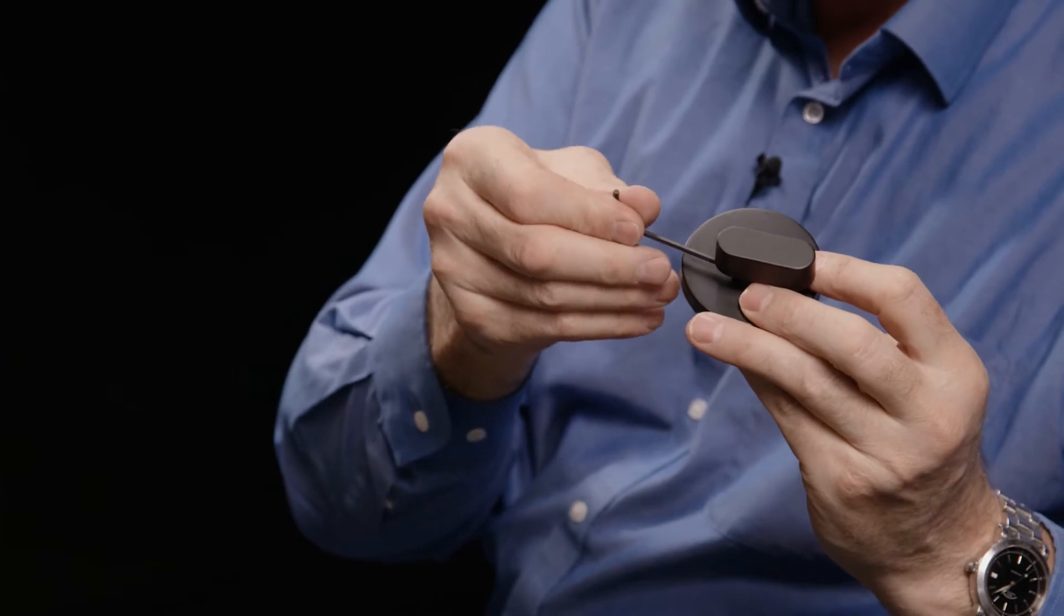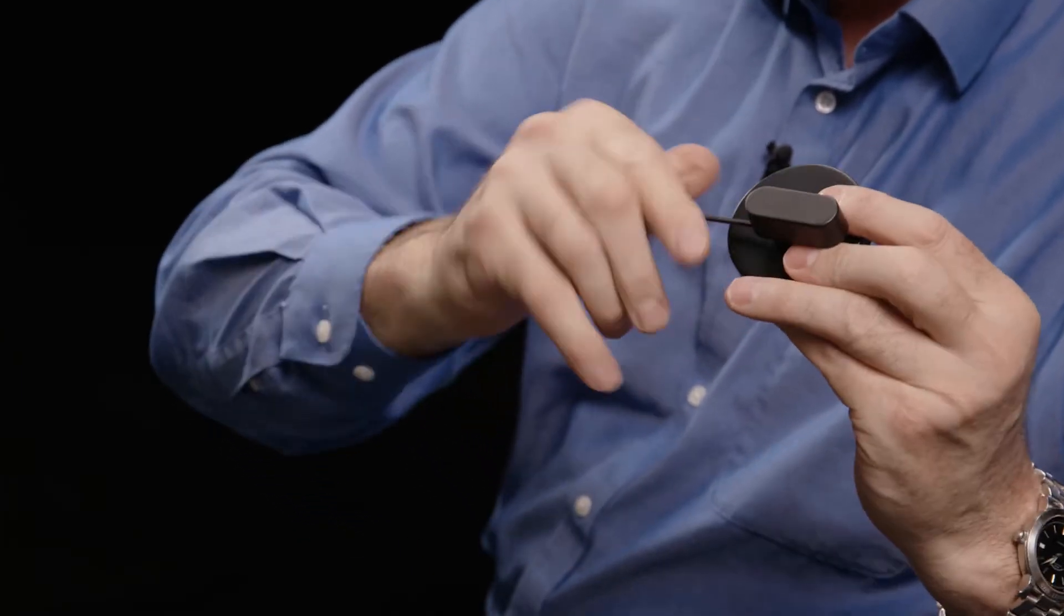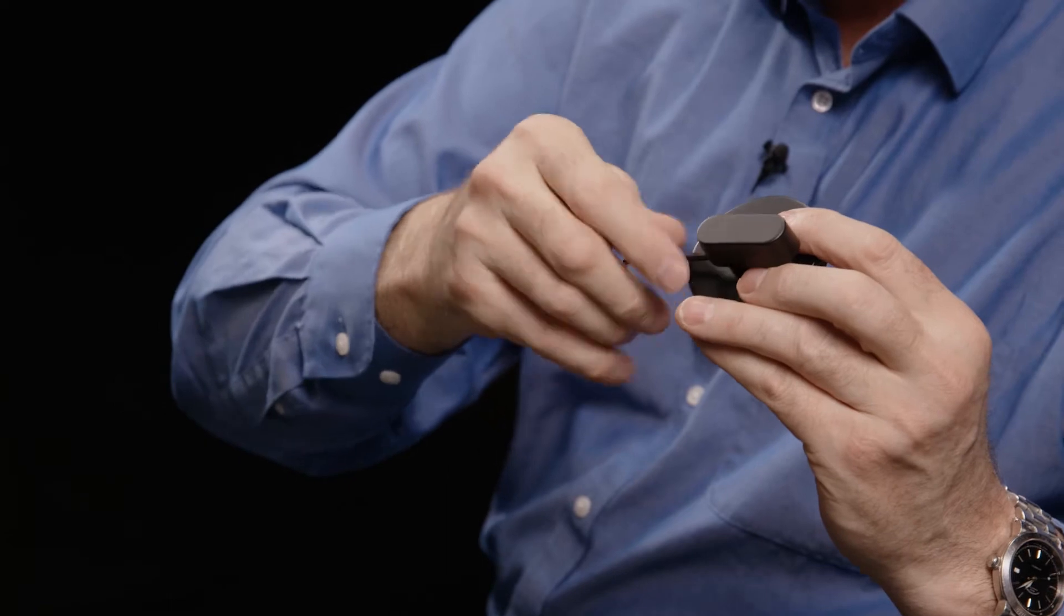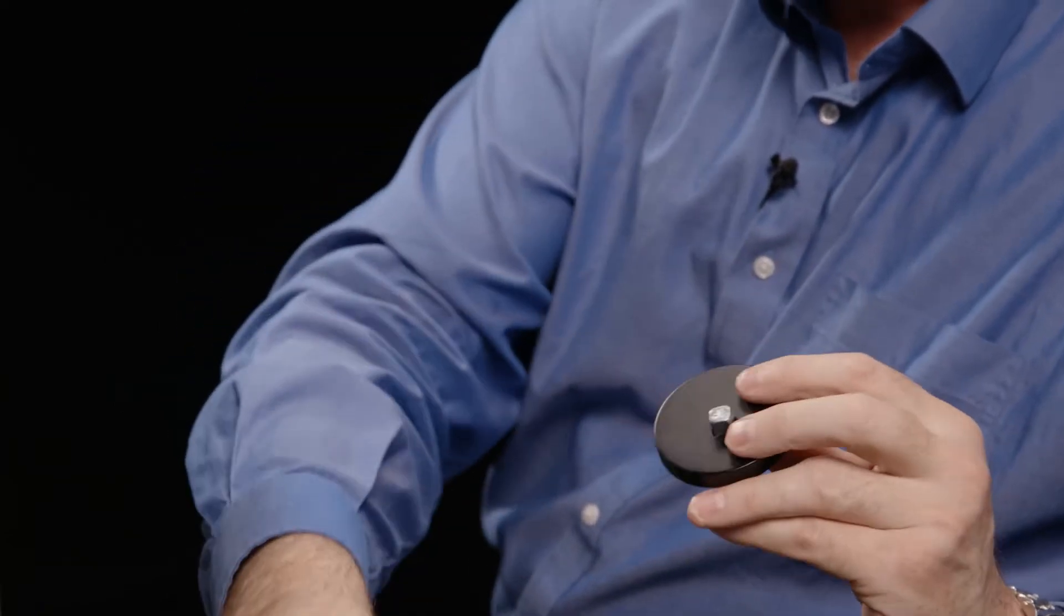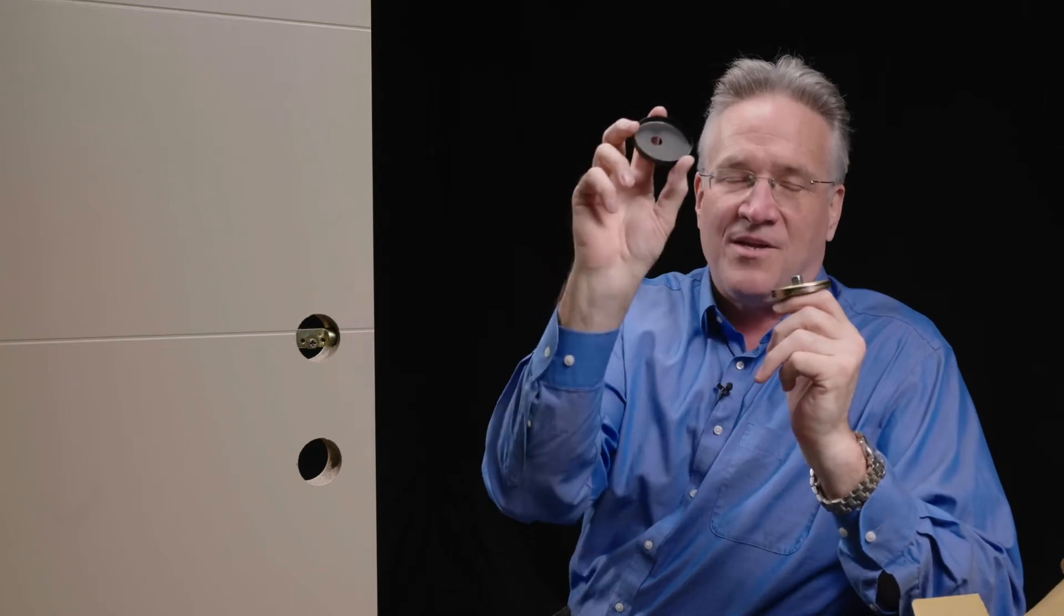Using the supplied Allen key, I'm going to put it in that hole and simply loosen the set screw so that I can remove the thumb turn. Once I've removed the thumb turn, I can then remove the cover plate.